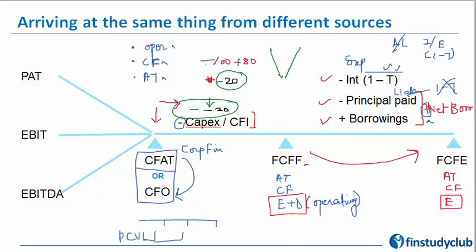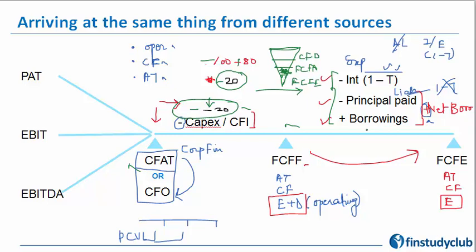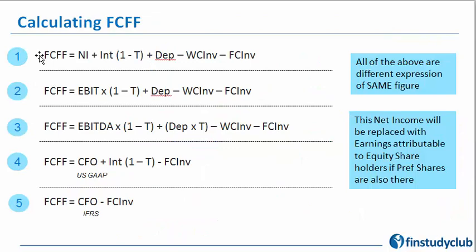This funnel diagram helps understand the cash flow waterfall. You start with broad cash inflows, then deduct operating expenses to arrive at CFO. Then deduct CFI to arrive at FCFF. From there, you make payments to equity shareholders and bondholders — interest and principal. Then you arrive at FCFE. Importantly, no payment to common equity (buybacks or dividends) has been made yet at this stage.